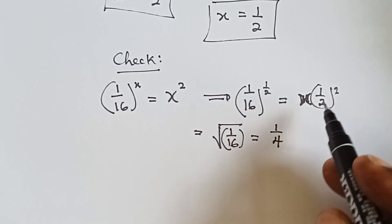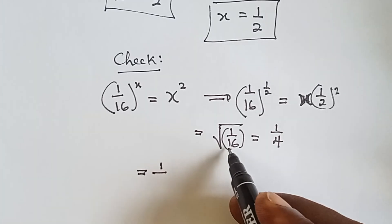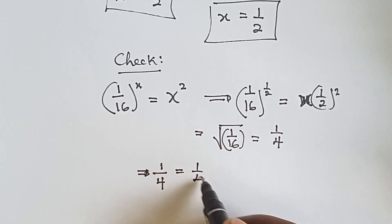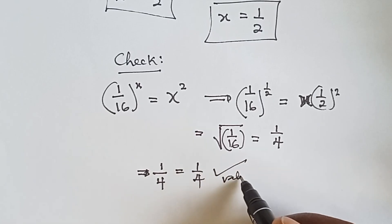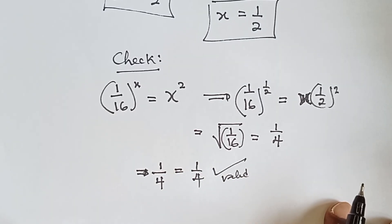1 over 2 raised to power 2. That is x equals to 1 over 2 is a valid answer.